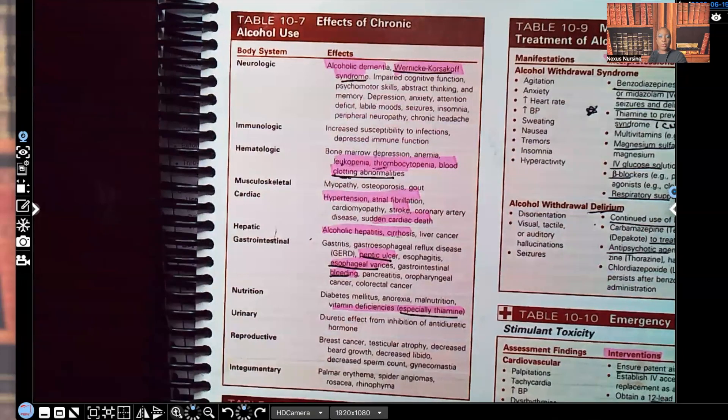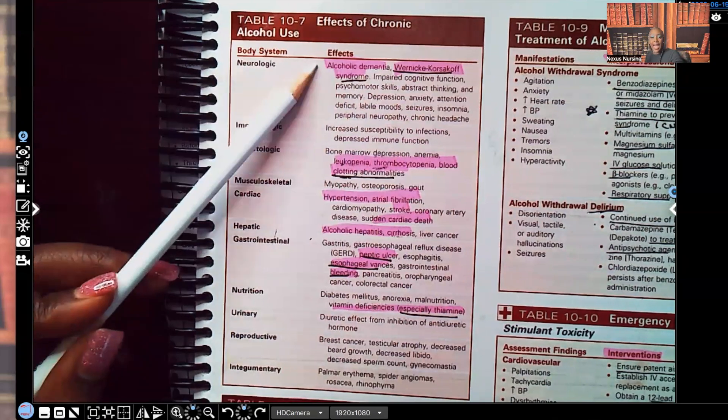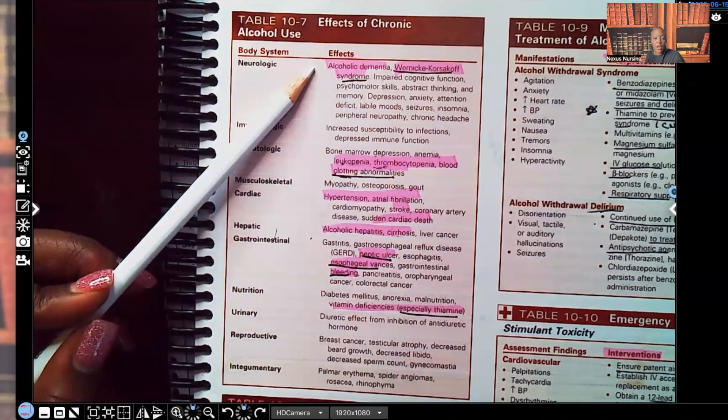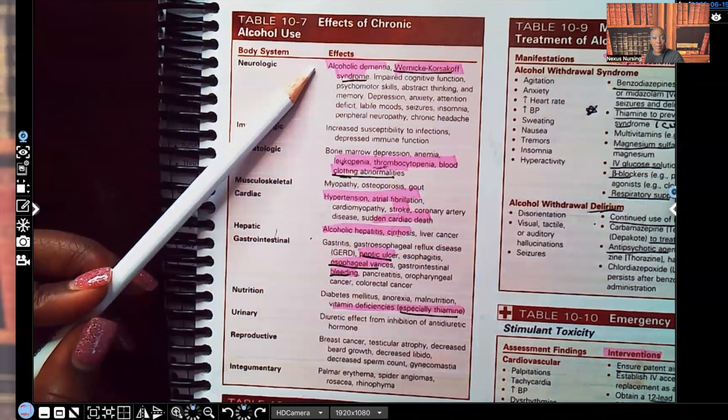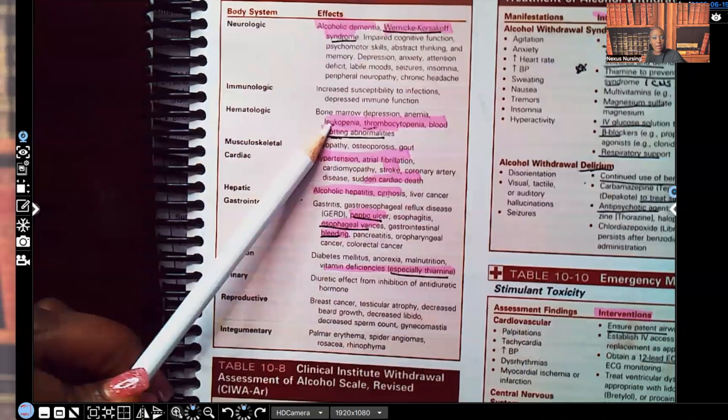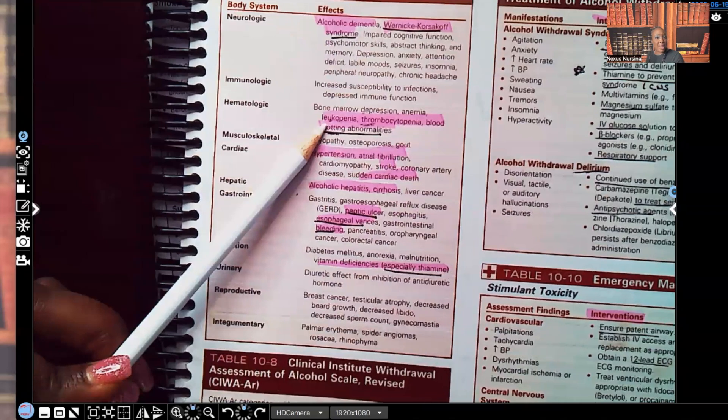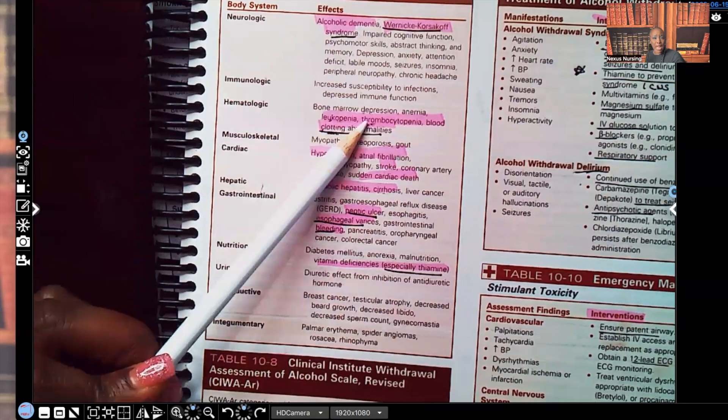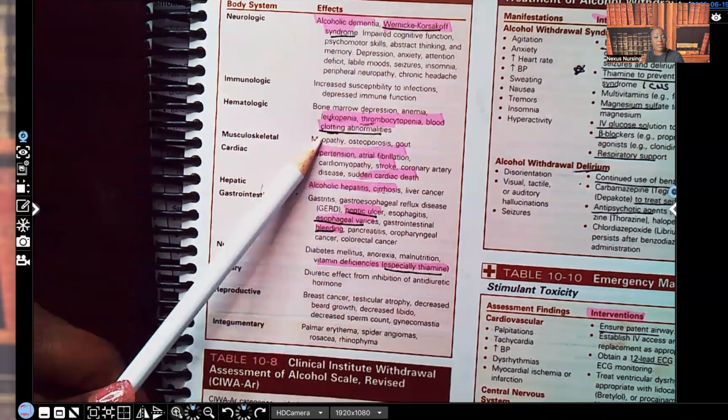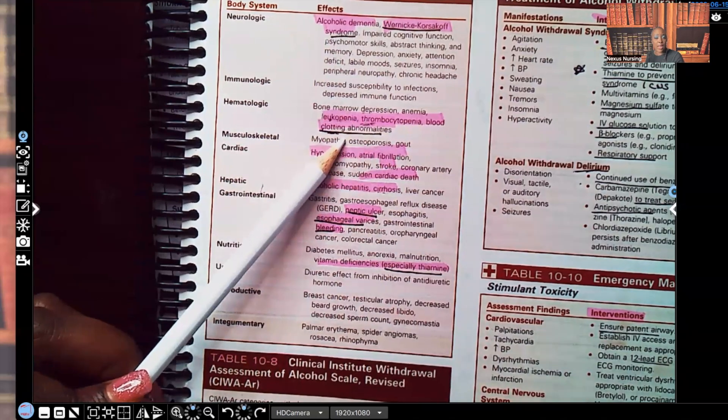I want you to take a look at this, effects of chronic alcohol use. And I love this because it breaks it down by system. Look at the neurological effects: alcohol dementia, Wernicke-Korsakoff syndrome. Remember, that's deadly. For hematologic, leukopenia. Guess what? That patient's going to be at risk for what? Infection. Thrombocytopenia. They're going to be at risk for what? Bleeding. And of course, blood clotting abnormalities with those blood disorders.